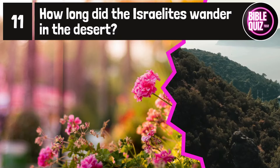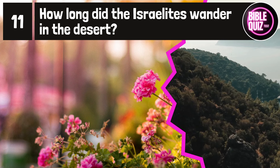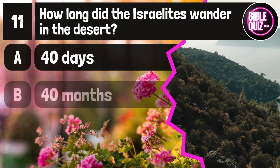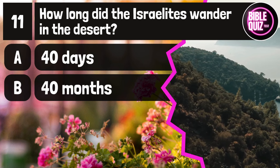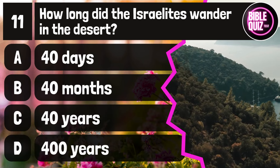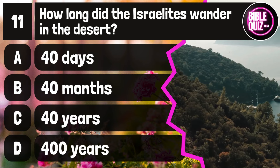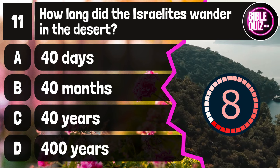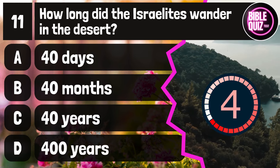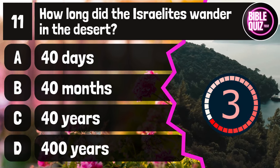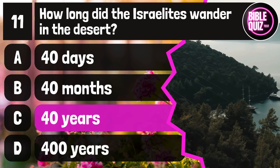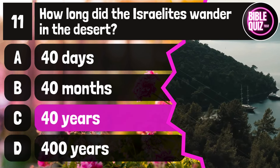Question number 11. How long did the Israelites wander in the desert? Option A: 40 days. Option B: 40 months. Option C: 40 years. Option D: 400 years. Time to think. The answer is option C: 40 years.